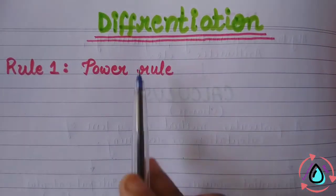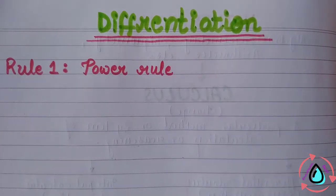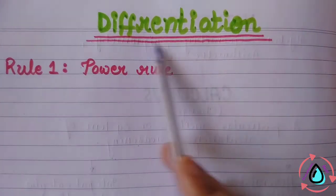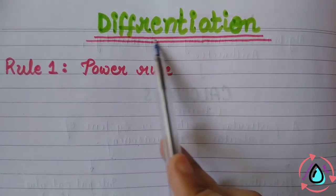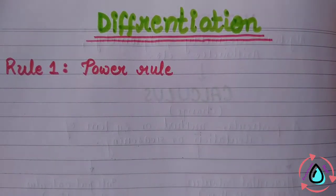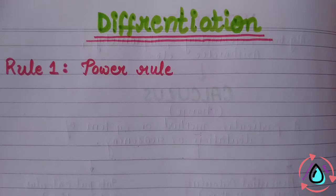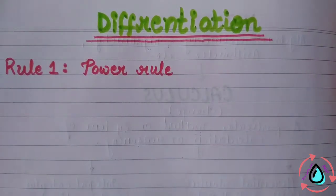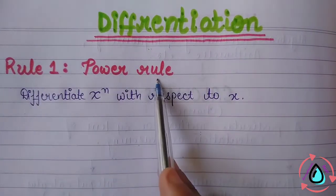Differentiation is a process. When a question asks us to differentiate something, we perform that process, and the result we get at the end is called the derivative. Many people get confused between differentiation and derivative — differentiation is the process, and when we get the final answer, that result is the derivative. So our Rule 1 is the Power Rule.